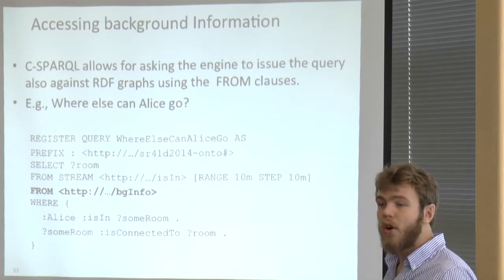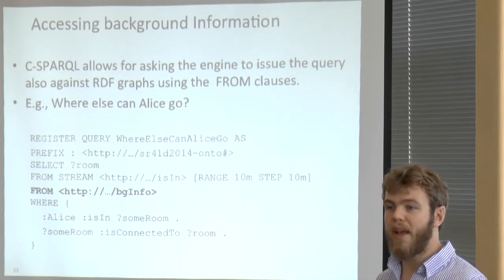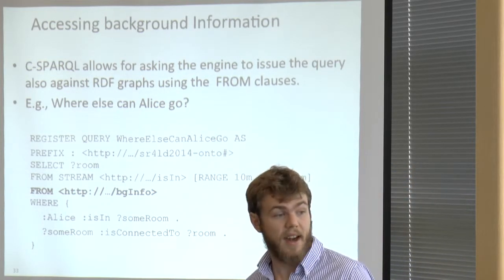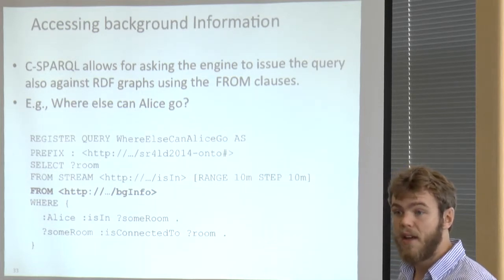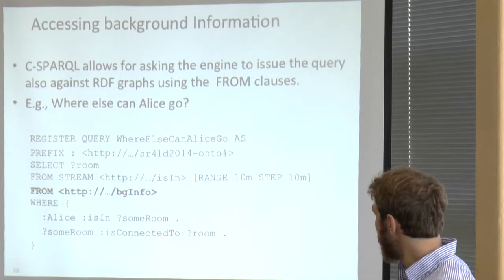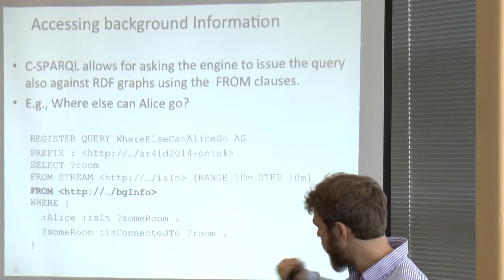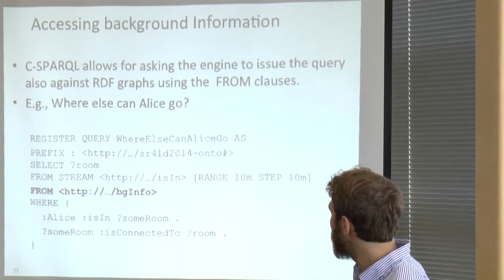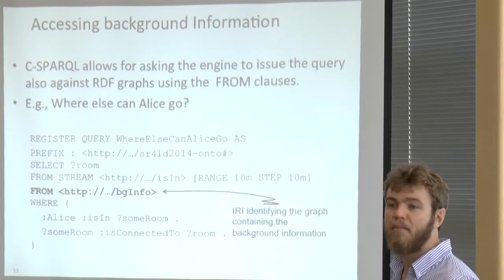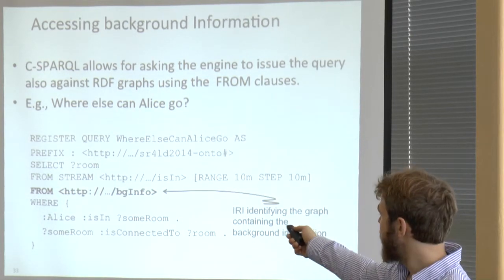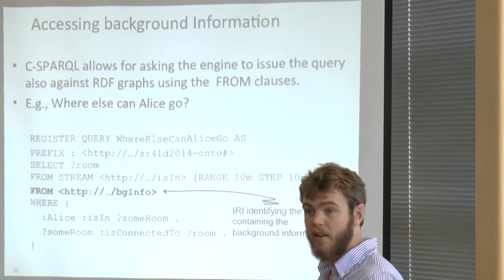Regarding accessing background information: we saw the FROM STREAM clause, but what about plain old RDF graphs? C-SPARQL still allows you to target those graphs, but you need to integrate the information in your query using the standard SPARQL FROM clause. They are still identified by URIs, and from the query it is clear what nature of information you are targeting.